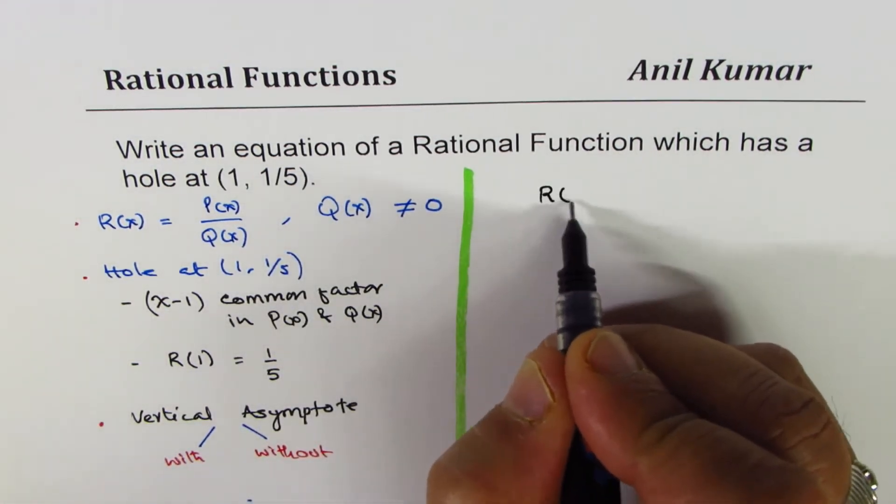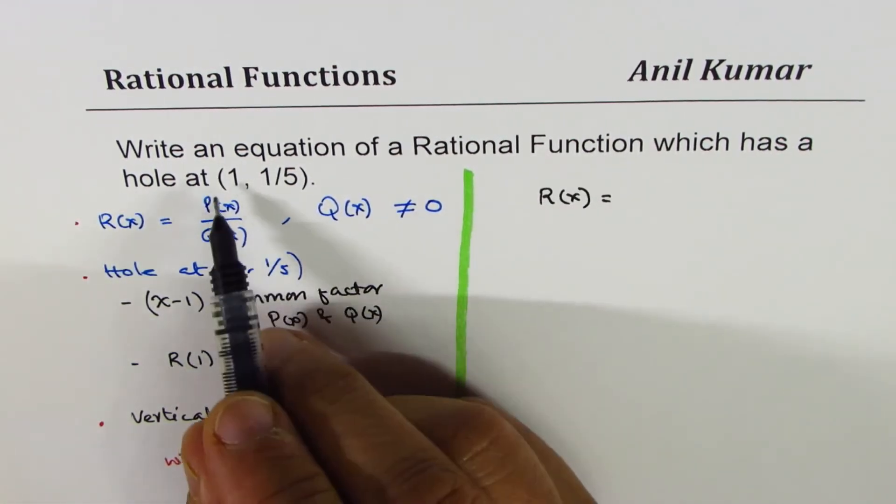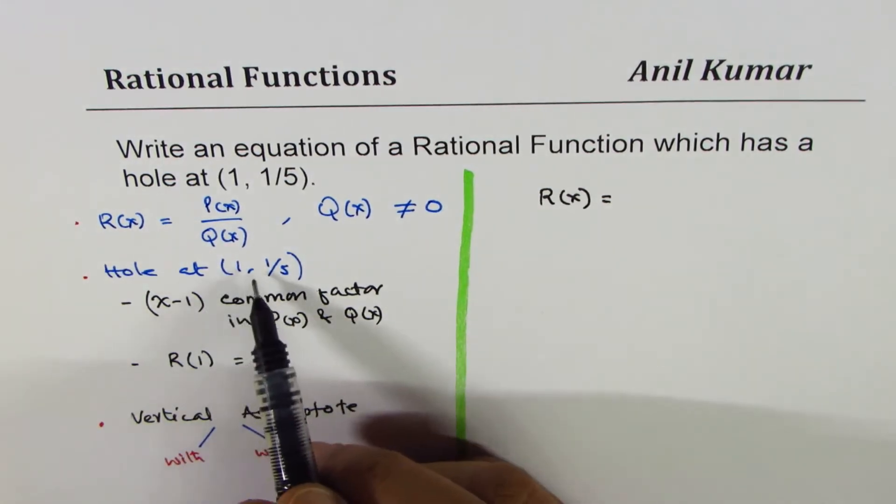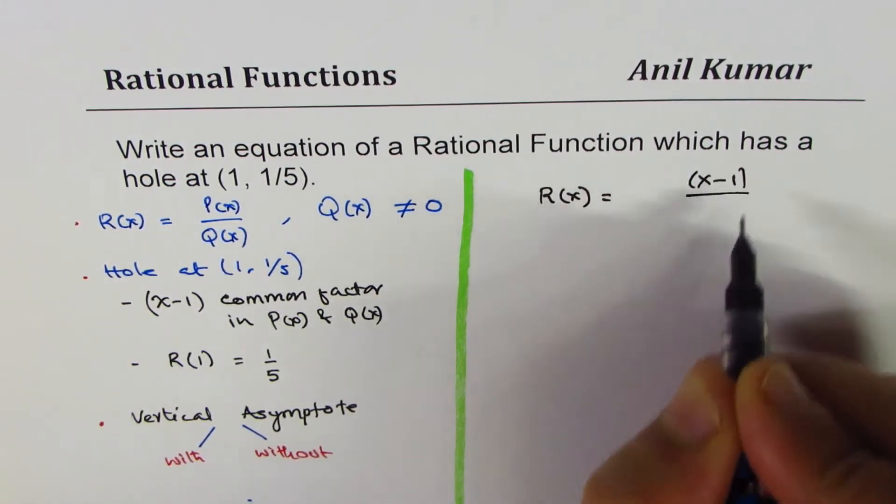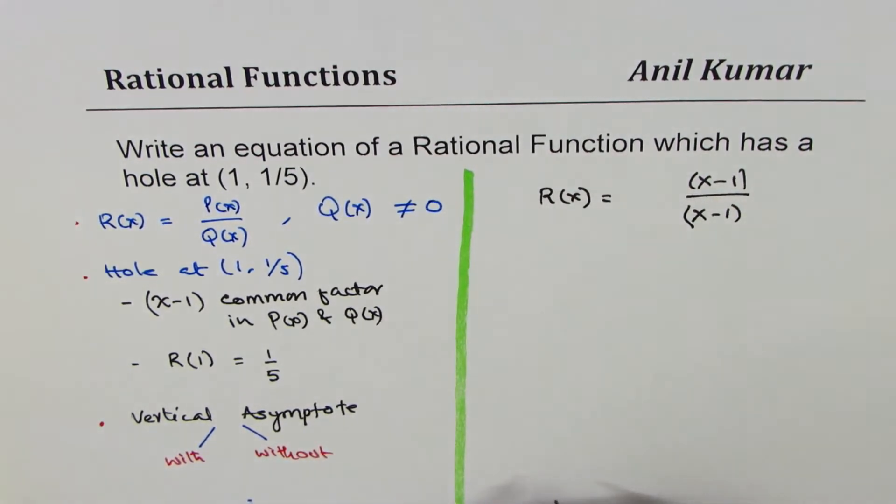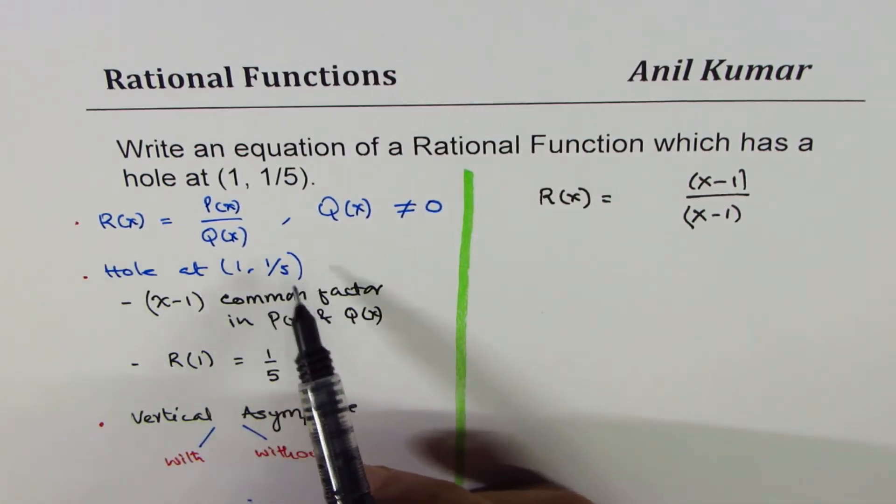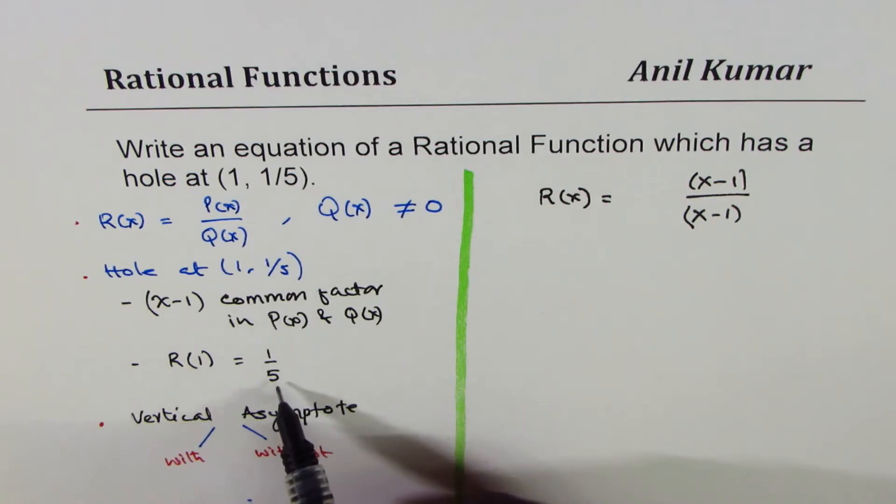Let the rational function be R(x). Since the hole is at x equals 1, we do have a factor (x-1) in the numerator and (x-1) in the denominator. Now what we need is the value of the function at 1 should be equal to 1/5.